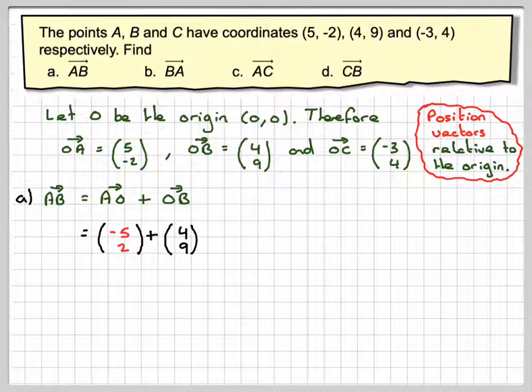And therefore, I can add those together. So I'm going to get -1, -5 plus 4, and 2 plus 9, which makes 11.